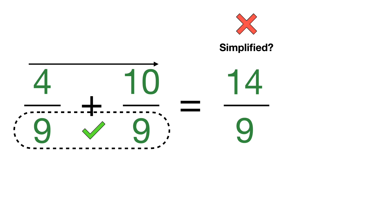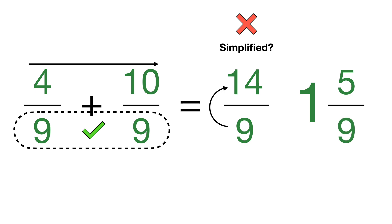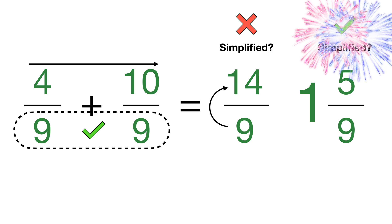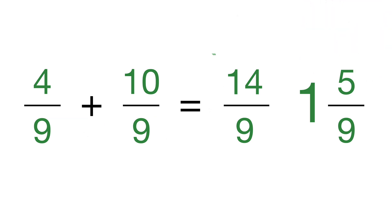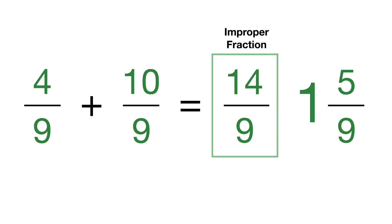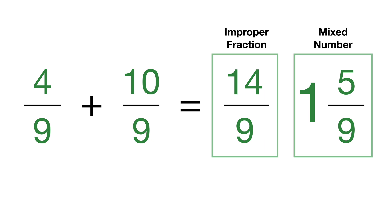However, when the numerator is larger than the denominator, you can create a mixed number — a whole number with a fraction on the side. To do that, figure out how many times the denominator goes into the numerator. 9 goes into 14 just one time, so that's the whole number. We still have 5 more units to reach 14, so 5 is the numerator and the denominator stays as 9. You can write this as the improper fraction 14/9, or as the mixed number 1 and 5/9.